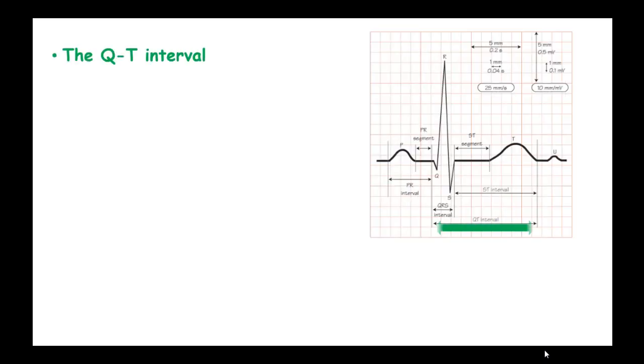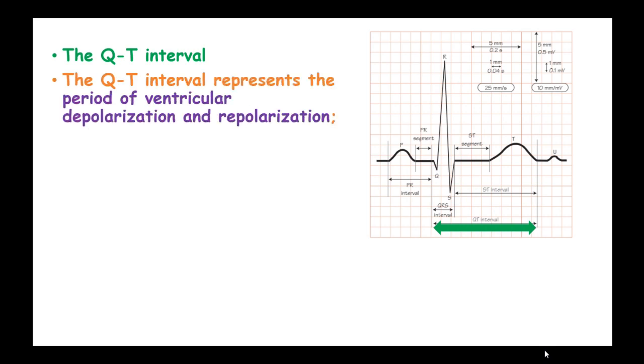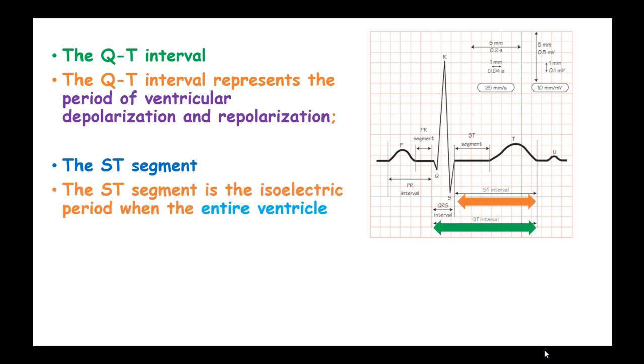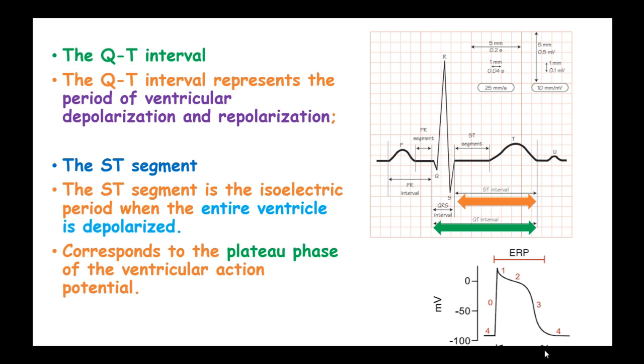The Q-T interval. The Q-T interval represents the period of ventricular depolarization and repolarization. The ST segment. The ST segment is the isoelectric period when the entire ventricle is depolarized. And this ST segment corresponds to the plateau phase of the ventricular action potential.